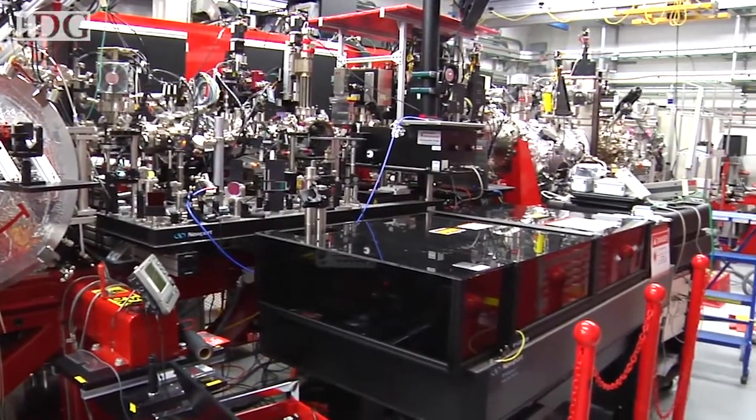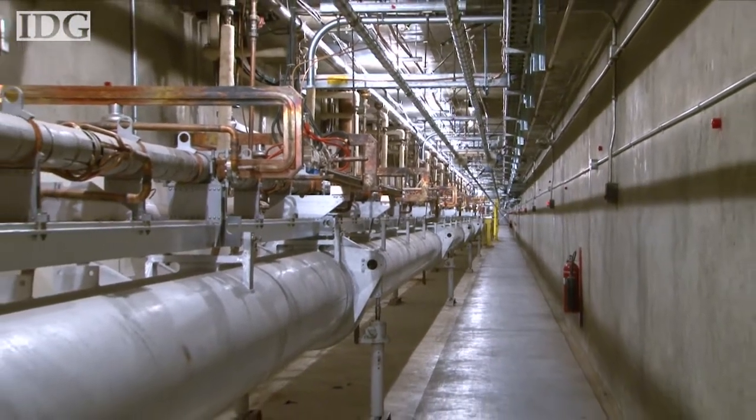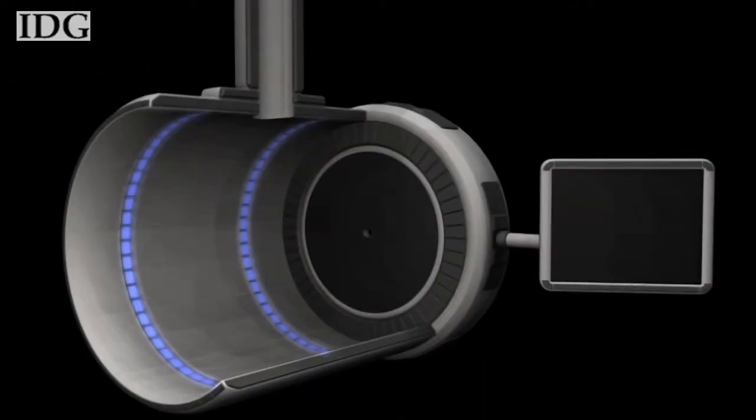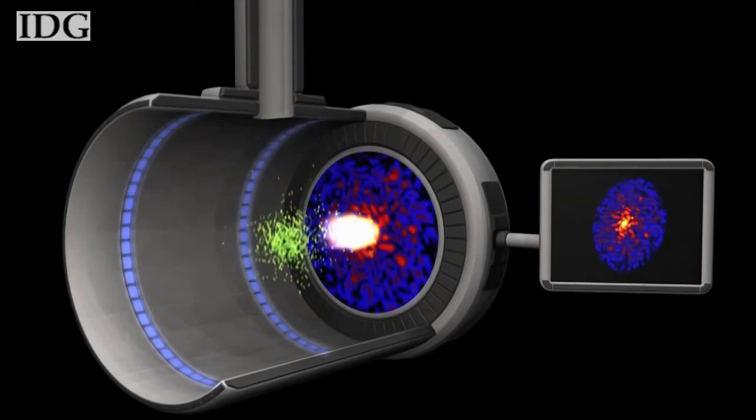And a lot of that work relies on this, the world's most powerful x-ray laser called the Linac Coherent Light Source, or LCLS. It's the first laser to produce hard x-rays that can be used to see down to the level of atoms and molecules.